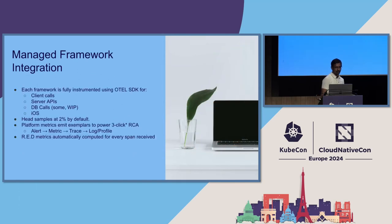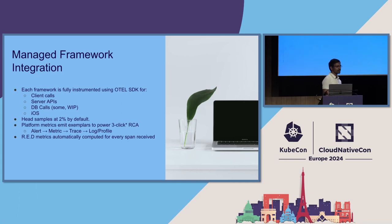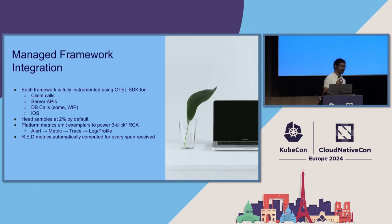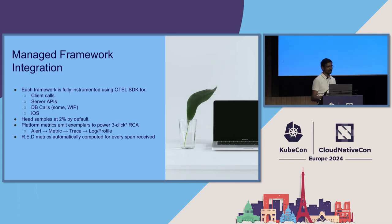Within the managed framework, we shipped in the OpenTelemetry SDK and made sure there is instrumentation for all client calls and server APIs. For database calls, depending on the database, some already have instrumentation; we are working with database providers internally to make sure the remainder is covered. We also have instrumentation for iOS, with Android coming in the future. We sample at 2% by default, and this allows us to do what is the three-click RCA — alert to metric to trace — and then decide if you want to go to log or profile, with exemplars playing a big role.